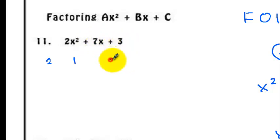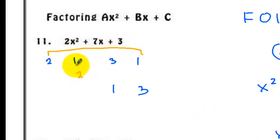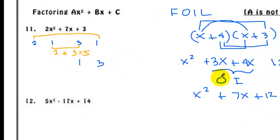So let's have factors (3, 1) and (1, 3). Let's try (2, 1) and (3, 1) first. Multiply the outer: 2 times 1 is 2, and then multiply the inner: 1 times 3 is 3. If you add 2 and 3, you get 5. But I need the sum of outer and inner to equal the middle term — in this case, I need 7.